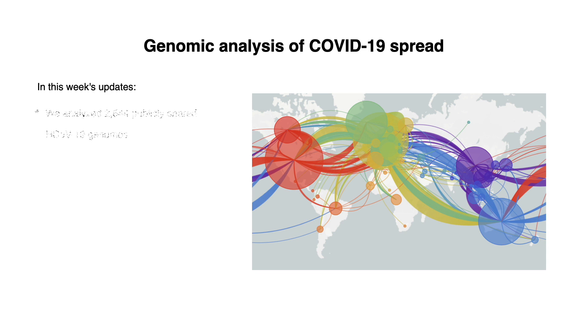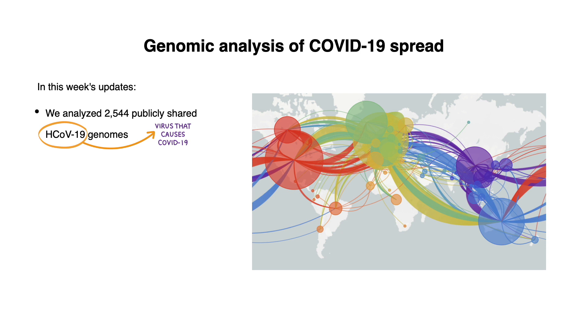In this week's updates, we have analyzed over 2,500 publicly shared HCOV-19 genomes. By comparing these viral genomes to each other, we can characterize how COVID-19 is moving around the world and spreading locally.